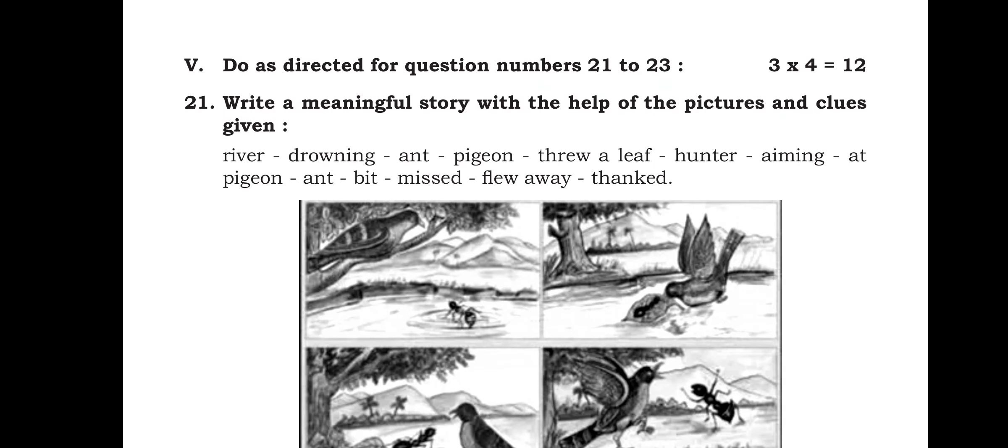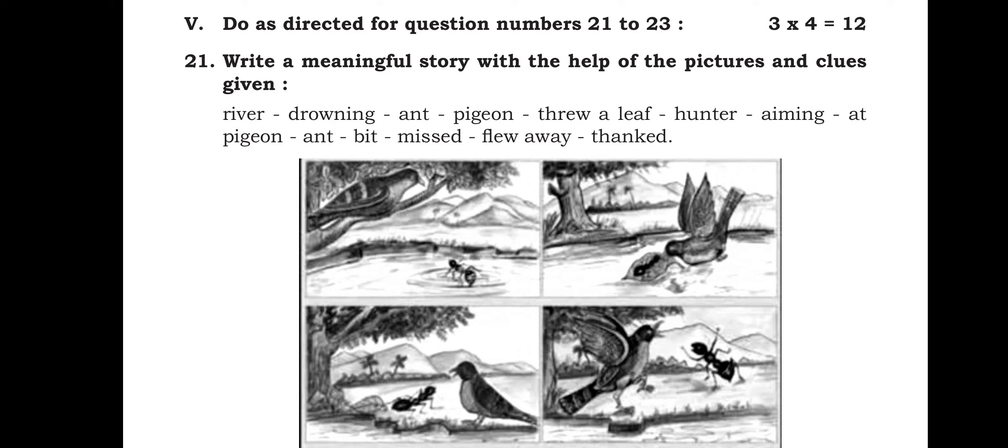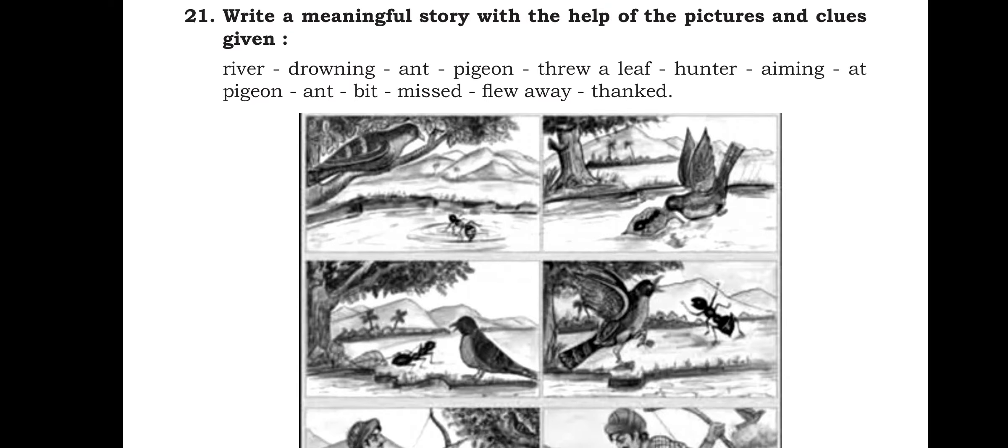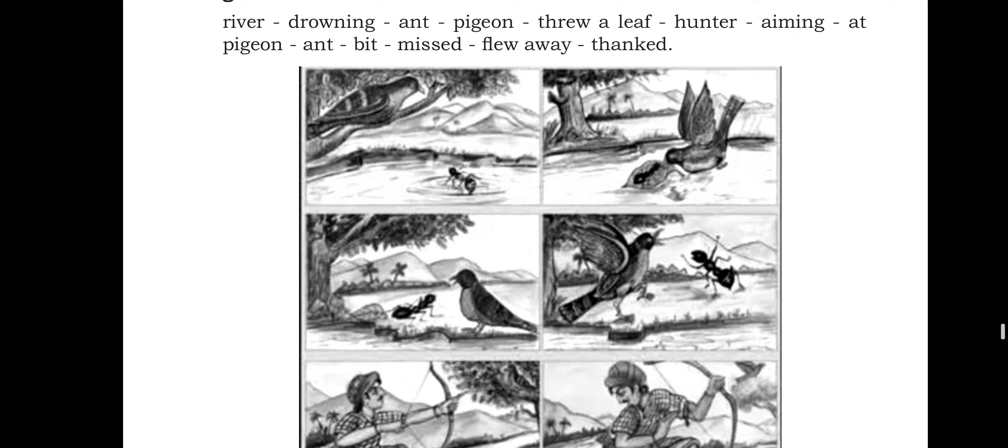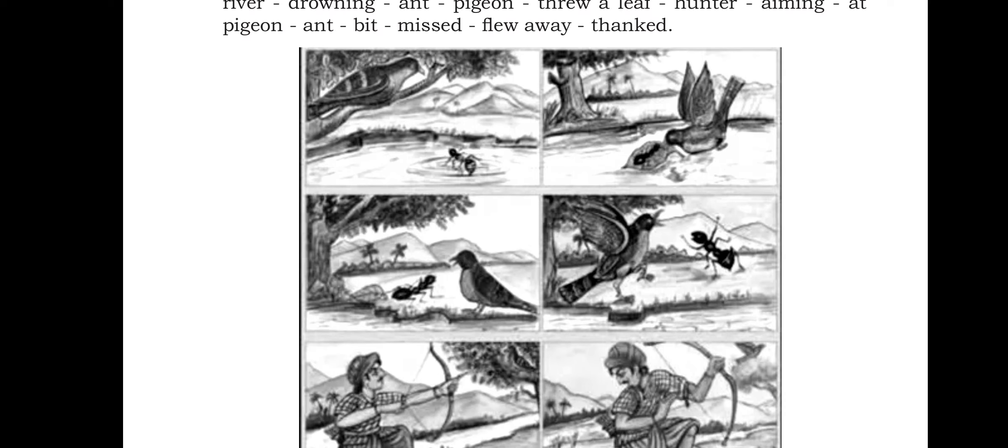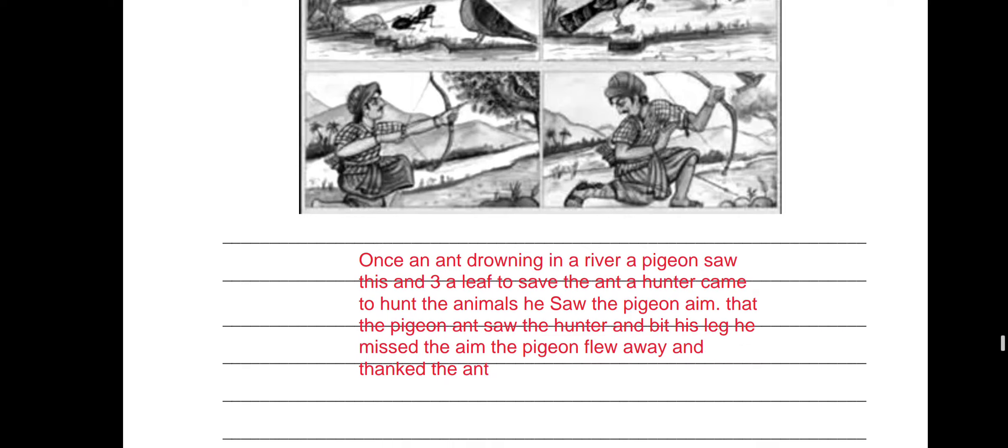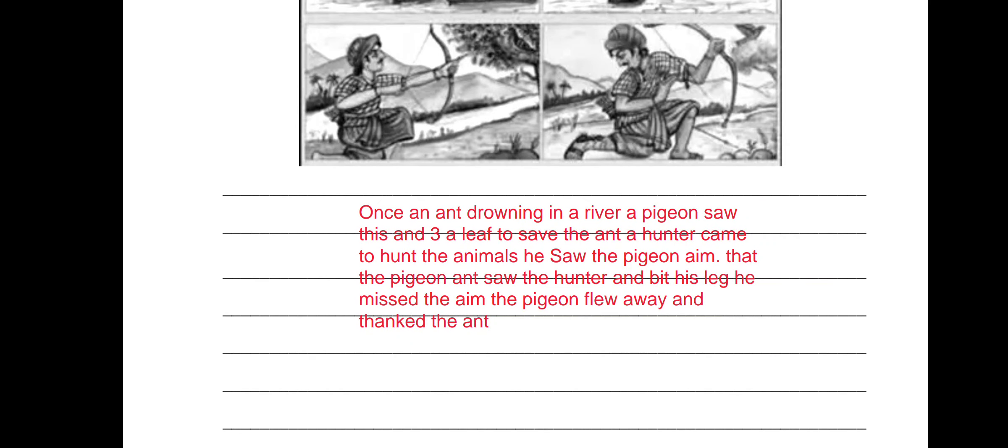Do as directed for the question number 21 to 23. Write a meaningful story with the help of the pictures and clues given. River drowning and pigeon threw a leaf. Hunter aiming at pigeon and bit, missed, flew away. Once an ant was drowning in a river, a pigeon saw this and sent a leaf to save the ant. A hunter came to hunt the animal. He saw the pigeon and aimed at it. The ant saw the hunter and bit his leg and missed the aim. The pigeon flew away and thanked the ant.